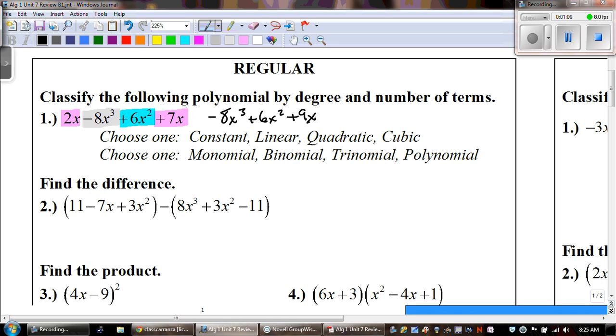Now, the first thing we need to do is decide if it's constant, linear, quadratic or cubic. And we look at the highest degree. And that tells me that this is a cubic. And now, I'm going to look at the number of terms. And I have 1, 2, 3 terms, which means it's a trinomial. So, the name of this is a cubic trinomial.